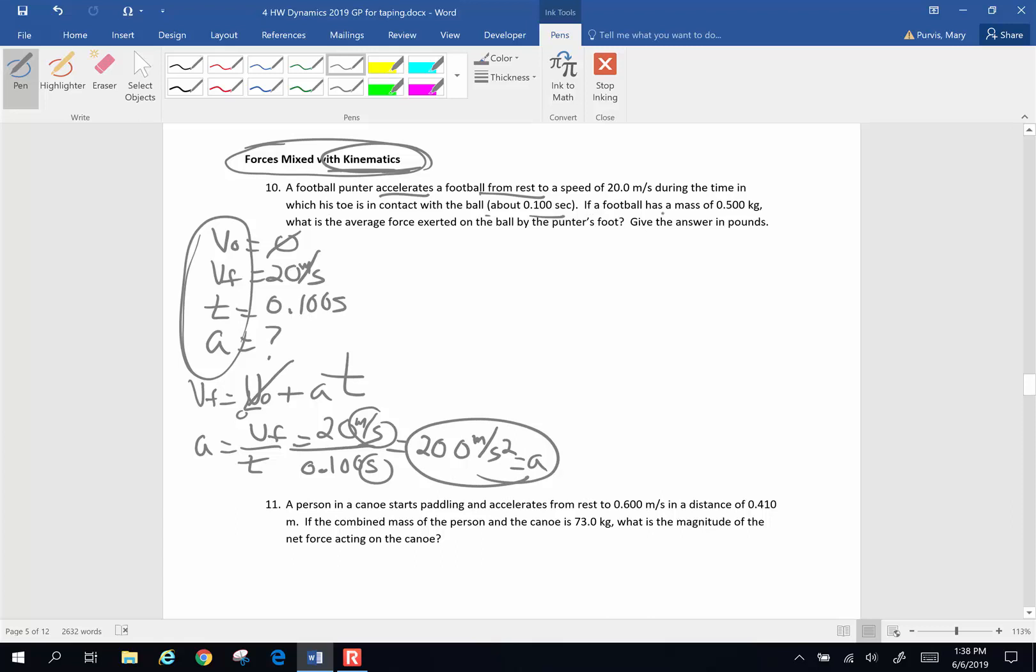Now, let's continue. If the football has a mass of 0.5 kilograms, what is the average force exerted on the ball? Well, force is going to be mass times acceleration. The mass of the ball is 0.500 kilograms. And it's accelerated at a rate of 200 meters per second squared. So the force exerted on the ball times 0.5, I am going to end up with 100 newtons. And the question then says, convert the answer to pounds. Oh my goodness, aren't they ever happy?